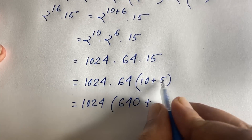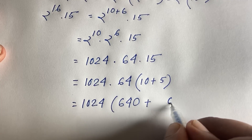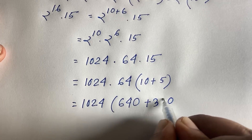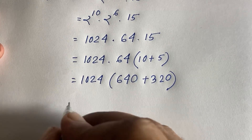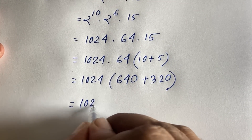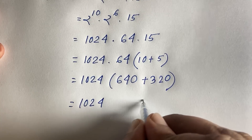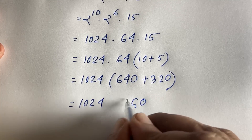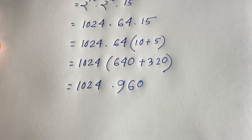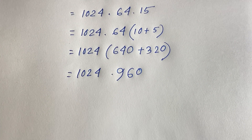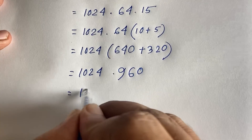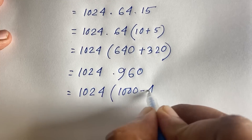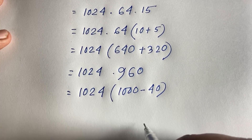Computing 64 times 15: 5 times 4 is 20, carry the 2; 5 times 6 is 30, plus 2 is 32. So 64 times 15 equals 960. Now we need to compute 1024 times 960, which we can write as 1024 times the quantity 1000 minus 40.